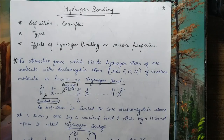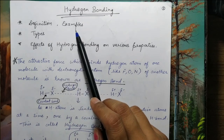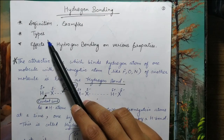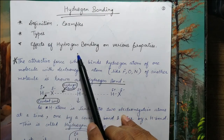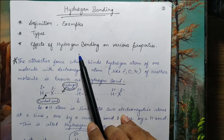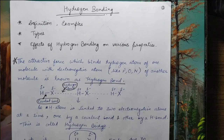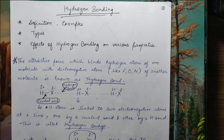Hello students. Today we are going to study the topic of the graduation series — it is Hydrogen Bonding. We will study the definition of Hydrogen Bonding, its examples, its types, and what effects Hydrogen Bonding has on various properties, and its importance for sustaining life. We will cover up all these things. So let's begin with its definition — what kind of thing Hydrogen Bonding actually is.